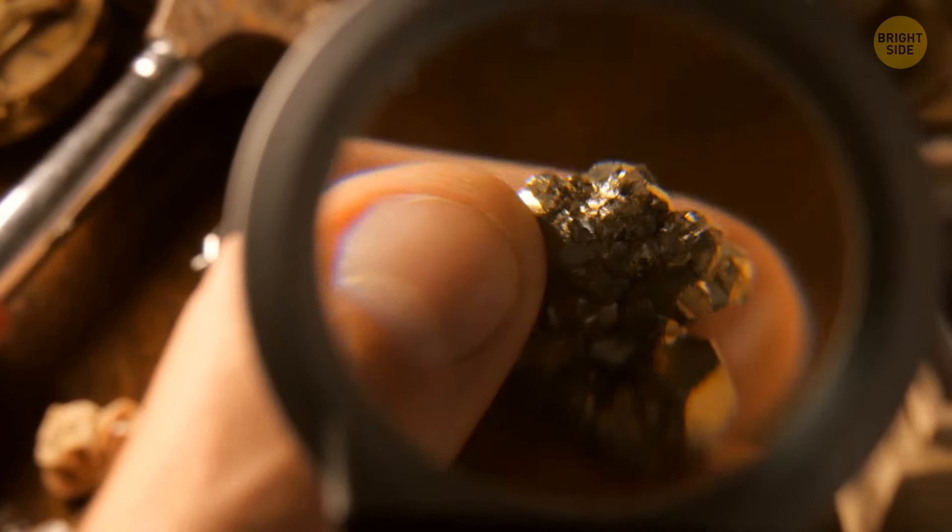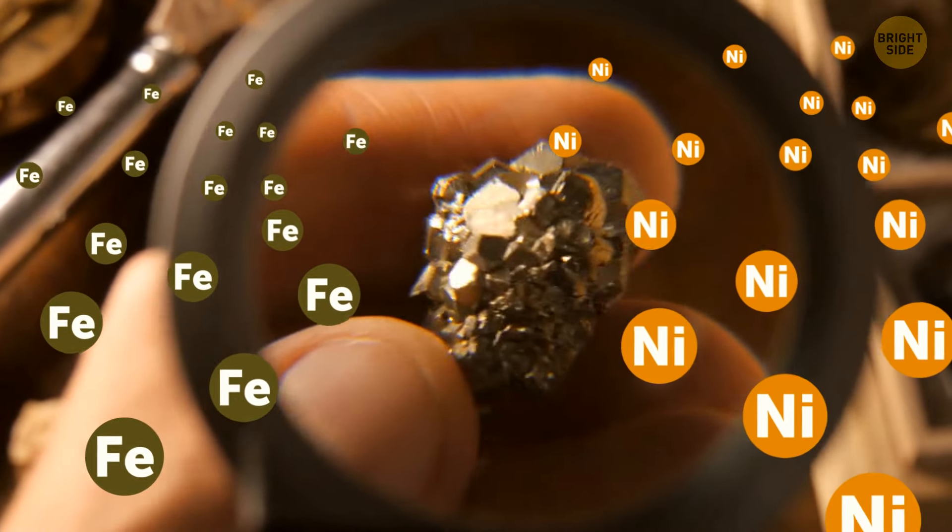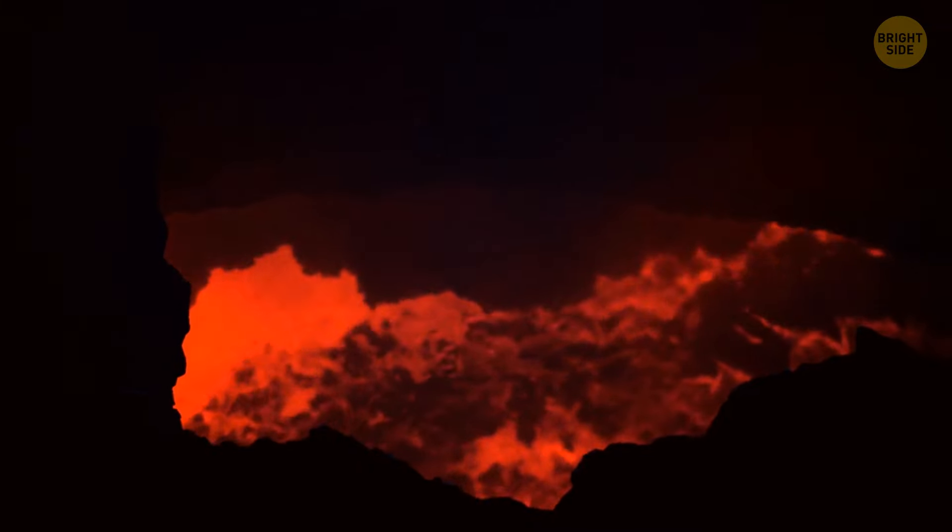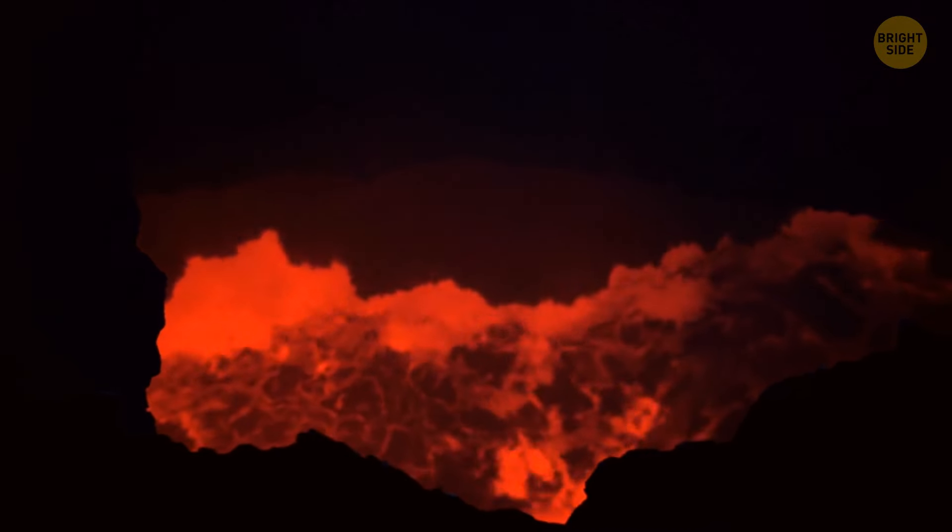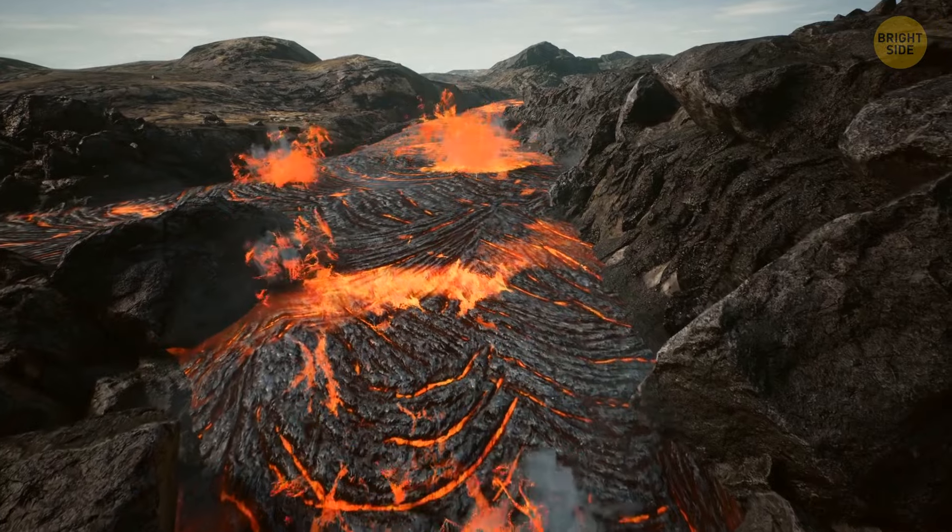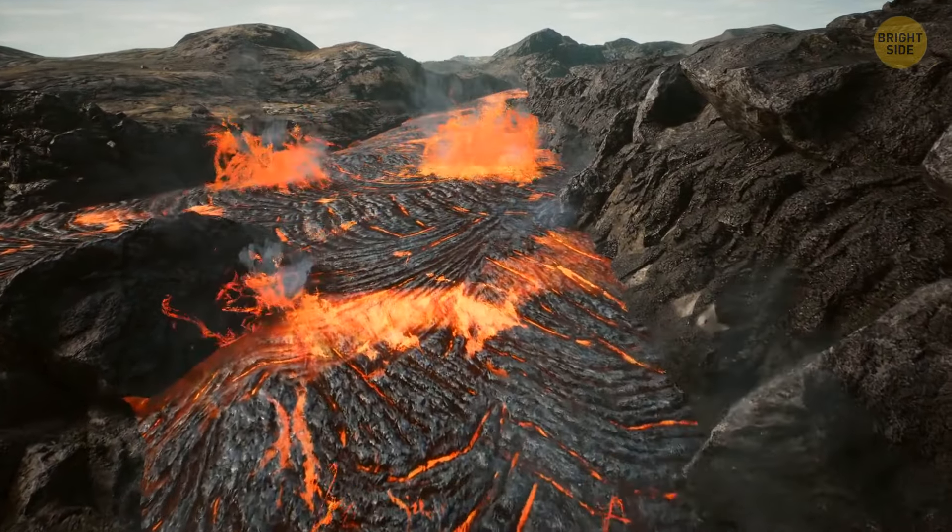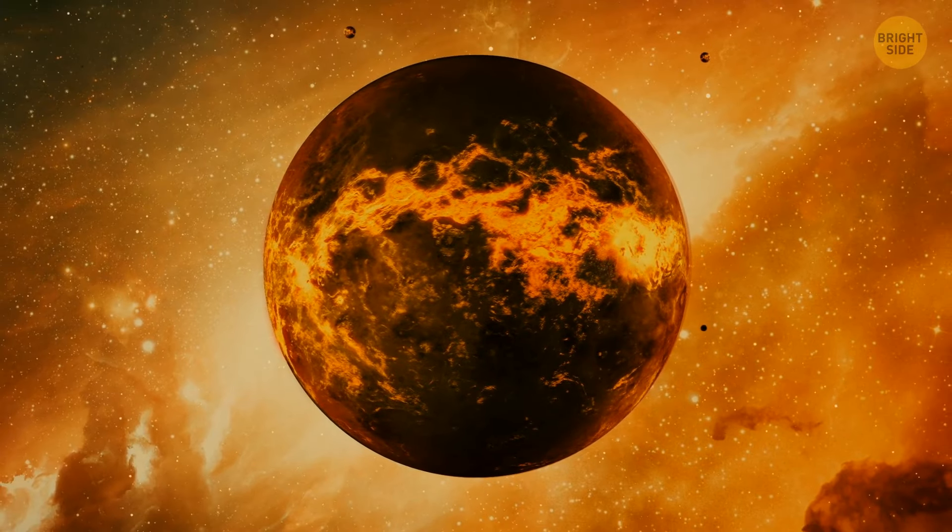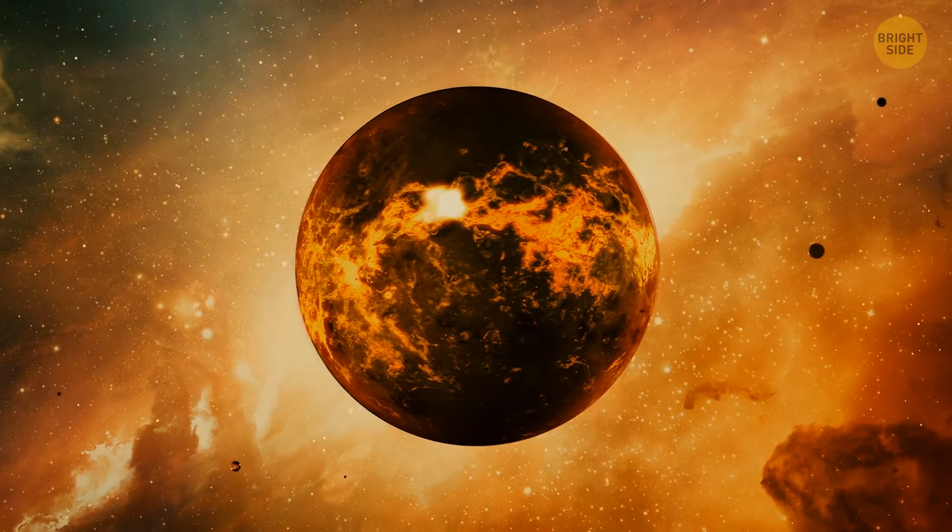They think that certain metals like iron and nickel, along with minerals containing them, played a big role in this process. These metals and minerals acted like assistance, helping chemical reactions happen that were important for life to begin. They were found all over the earth back then, especially in places where there wasn't much oxygen.